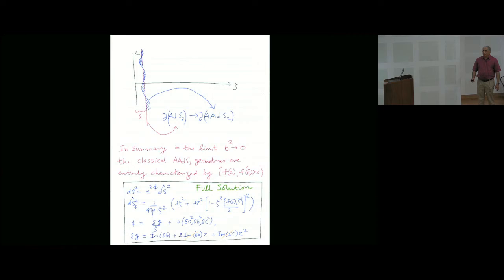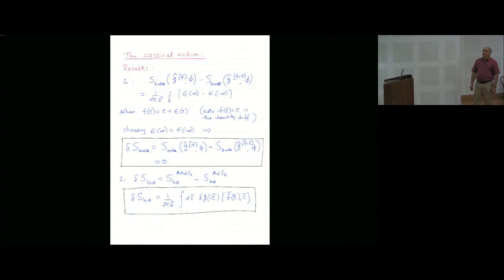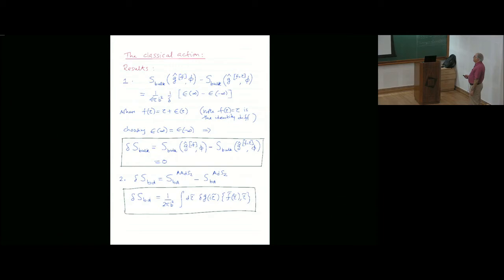You have e to the 2 phi, ds hat square, and these are the solutions basically. This is the solution of the classical solutions of our model. Now what do you do with that? You want to compute the classical action and the boundary part of the classical action.